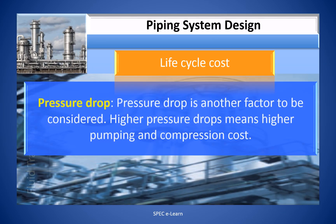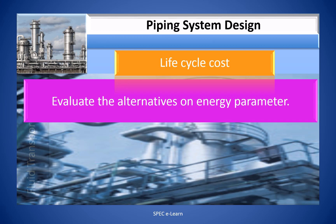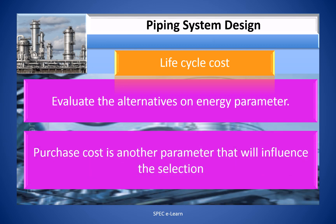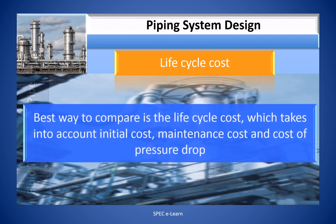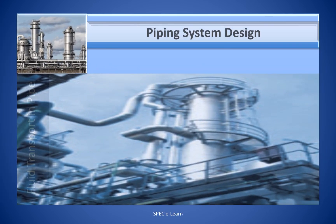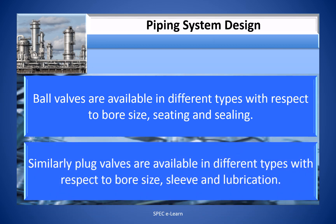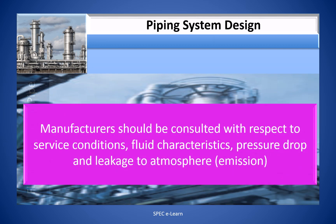Pressure drop is another factor to be considered. Higher pressure drop means higher pumping and compression cost, so evaluate alternatives on an energy basis. Purchase cost is another parameter that influences selection. The best way to compare is life cycle cost, which takes into account the initial cost, maintenance cost, and cost of pressure drop. Ball valves are available in different types with respect to bore size, seating, and sealing. Similarly, plug valves are available in different types with respect to bore size, sleeve, and lubrication. Manufacturers should be consulted with respect to service conditions, fluid characteristics, pressure drop, and leakage to atmosphere (i.e., emissions).